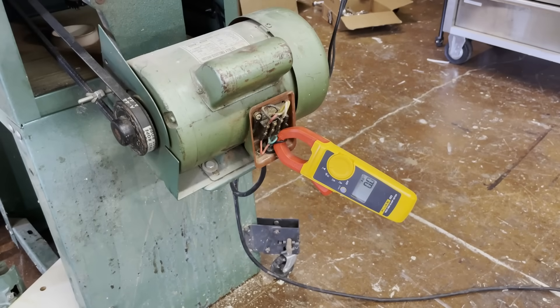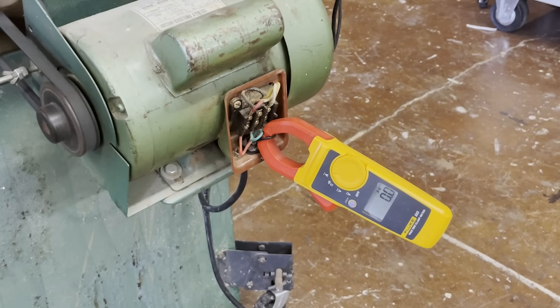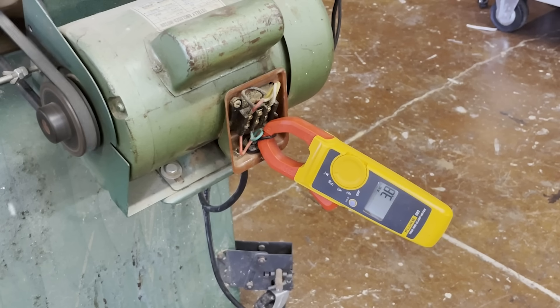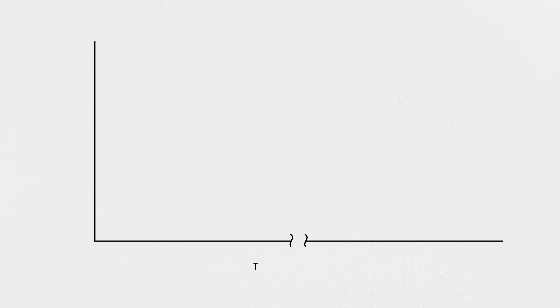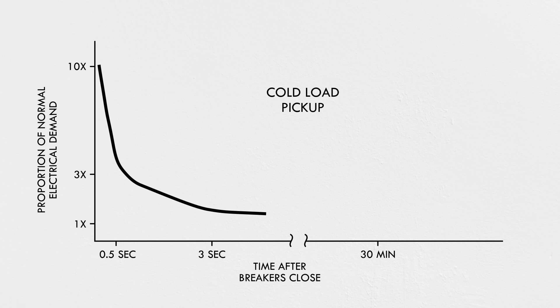And don't forget that many of these appliances use inductive motors that have huge inrush currents. Here's an ammeter on the motor of my table saw while I start it up — it draws a whopping 28 amps as it gets up to speed before settling down to 4 amps at no load. Imagine the demand from thousands of motors like this starting all at the exact same instant. The technical term for this is cold load pickup, and it can be as high as 8 to 10 times normal electrical demands before the diversity of loads starts to average out again, usually after about 30 minutes.